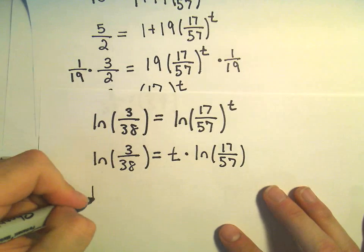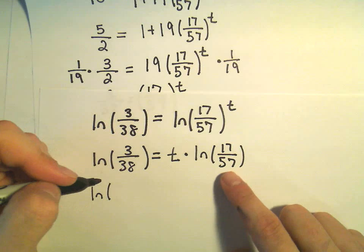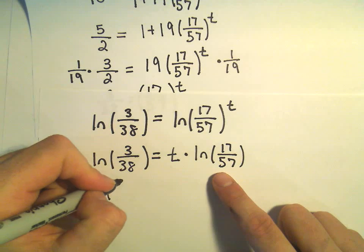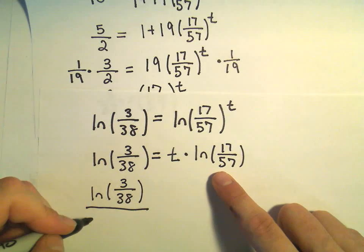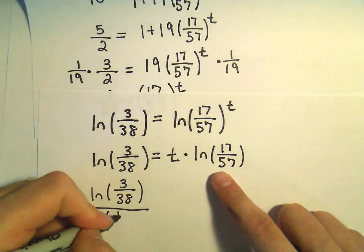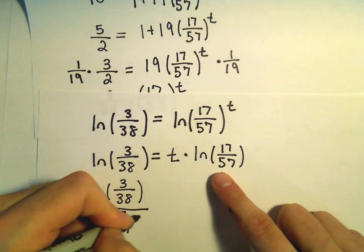And let's see, so now we can divide both sides by this natural logarithm of 17 over 57. So we'll get our solution to be the natural logarithm of 3 over 38 divided by the natural logarithm of 17 over 57.